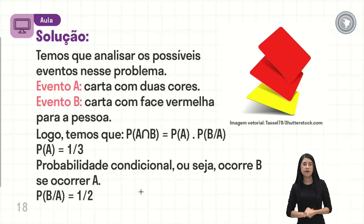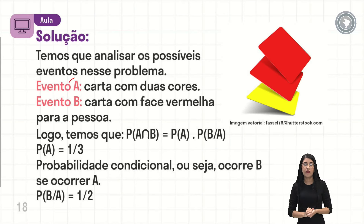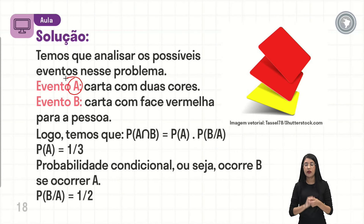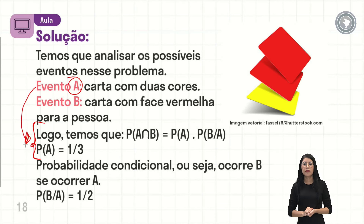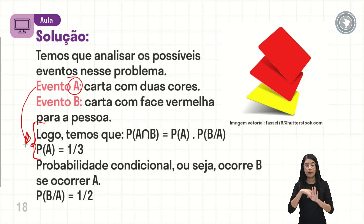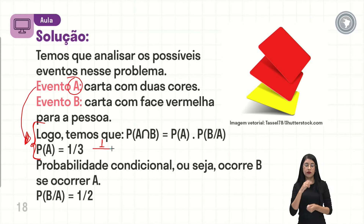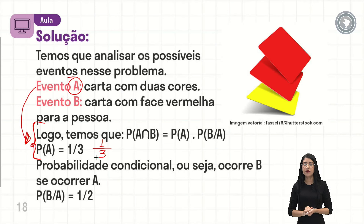Temos que analisar os possíveis eventos desse problema. Um evento que a gente vai chamar de A seria a carta com duas cores — a carta que tem uma face vermelha e uma face amarela. Se a gente calcular a probabilidade desse evento A: vai ser a quantidade de cartas com duas cores que eu tenho sobre a quantidade total de cartas. Eu tenho só uma carta que é vermelha e amarela. Então, vai ser 1 sobre a quantidade de cartas no total. A questão diz que são 3 cartas. A probabilidade é 1 sobre 3.